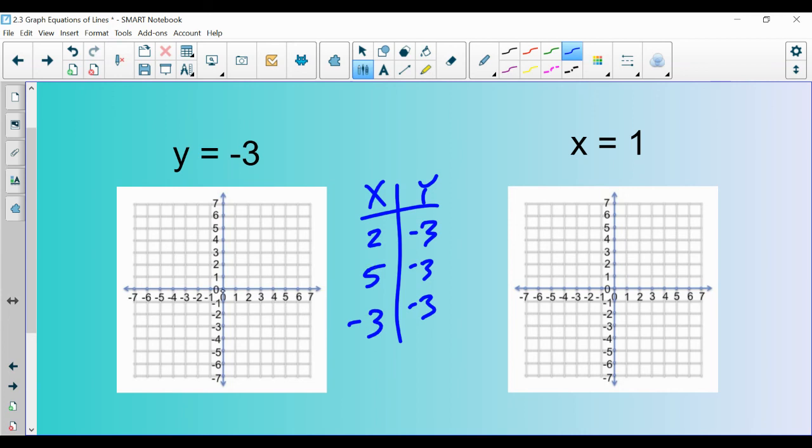For y=-3, the only thing that we know for sure is that y is negative 3. There isn't an x there, so x just doesn't matter. You can pick anything that you want for x. You can pick 2, you can pick 5, you can pick negative 3. When you go ahead and plot these points (2,-3), (5,-3), (-3,-3), you're going to see that they make a horizontal line. Everywhere on this line, the x value is changing, but the y value is always negative 3. That's why this is working.